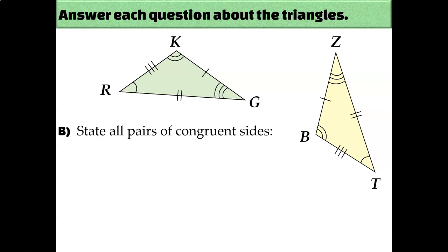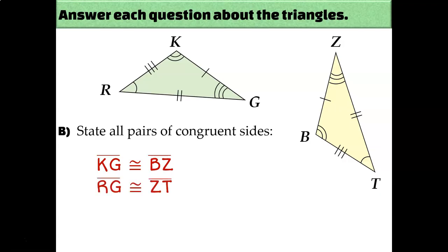We can do something similar for their side lengths. Side KG has one congruence mark, and so does side BZ, so those must be congruent sides. Likewise, side RG and side ZT both have two congruence marks, so they're congruent, and RK and BT have three, so they're congruent as well.